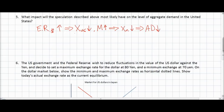A decrease in aggregate demand will lead to undesirable consequences for the US, including a fall in employment, a fall in national income, and possibly even a fall in the average price level — or deflation. So for all of these reasons, the strengthening of the US dollar is considered undesirable due to speculation in the United States foreign exchange market.